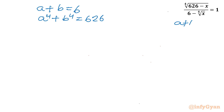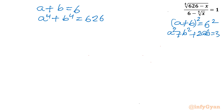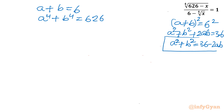If A plus B equals 6, then (A plus B) squared equals 36, which gives A² plus B² plus 2AB equal to 36, or A² plus B² equal to 36 minus 2AB. We will use this in our problem solving.